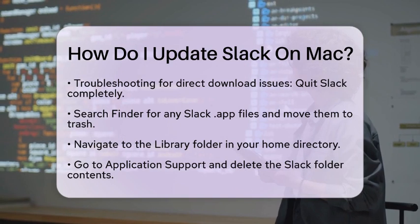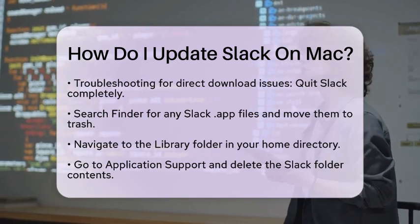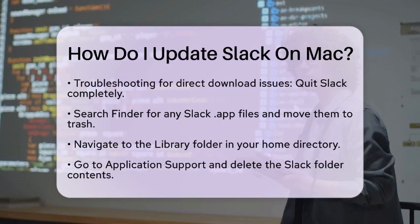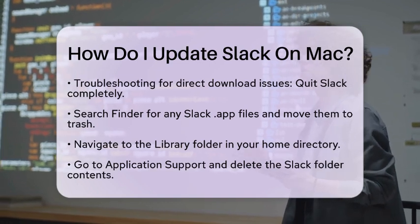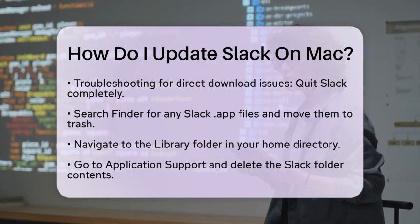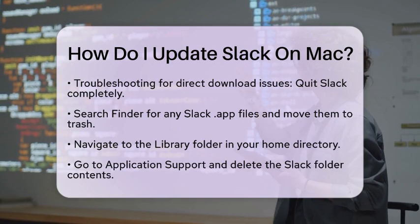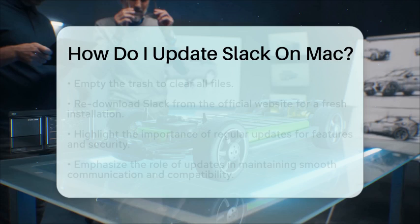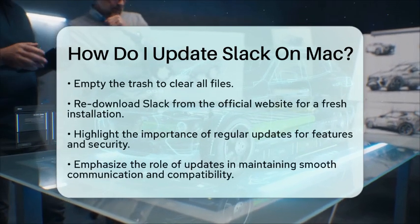Next, go to the folder named Library, which is located in your home directory, and then navigate to Application Support. Find the Slack folder there and delete all files and folders within it. After that, empty the trash to ensure everything is cleared out. Now you can re-download the latest version of Slack from the official Slack website and install it fresh.